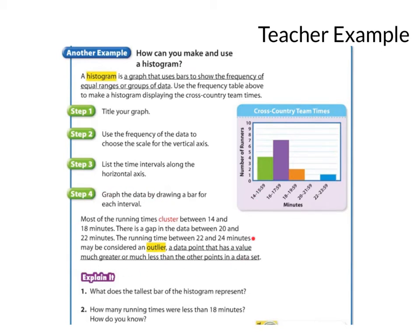This is a description of how we might talk about this graph. So, we'd say most of the running times cluster between 14 and 18 minutes. Most of them cluster in this area. But there is a gap in the data between 20 and 22 minutes here. There's a 0. The running time between 22 and 24 right here, we could consider that an outlier. Because it's kind of just way out by itself. It's much greater than the other points in the data set. And that person might need to practice more or condition more.